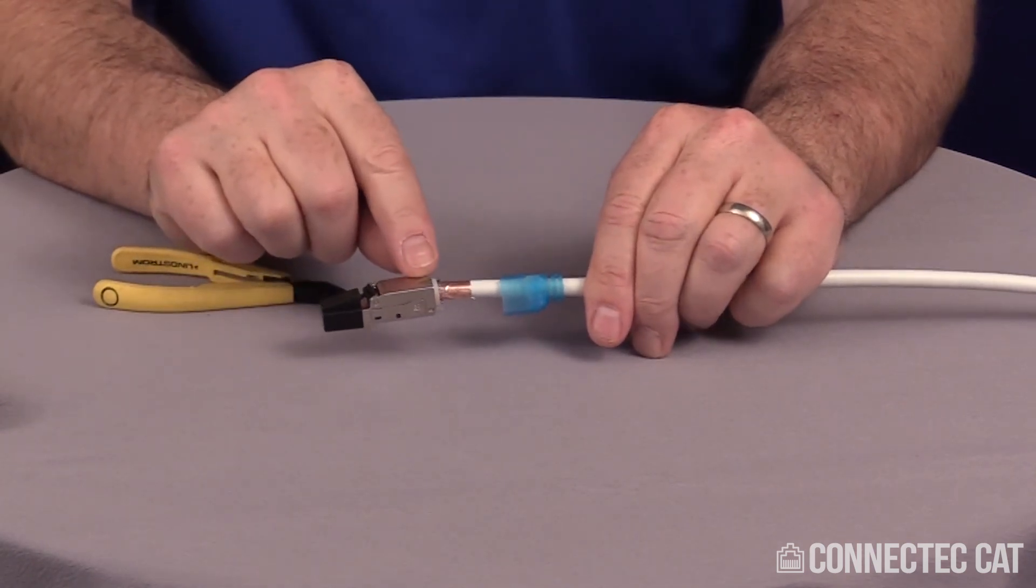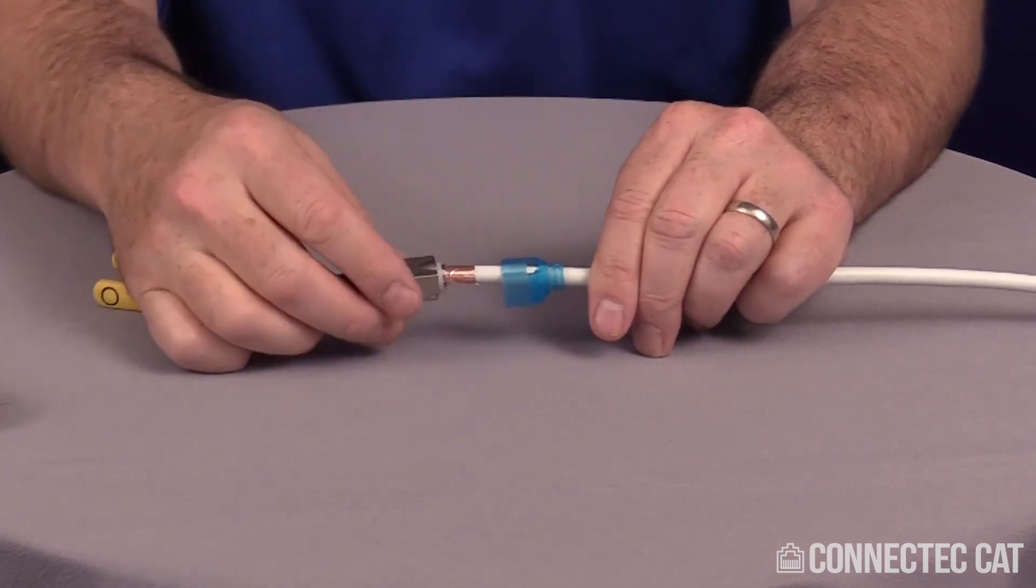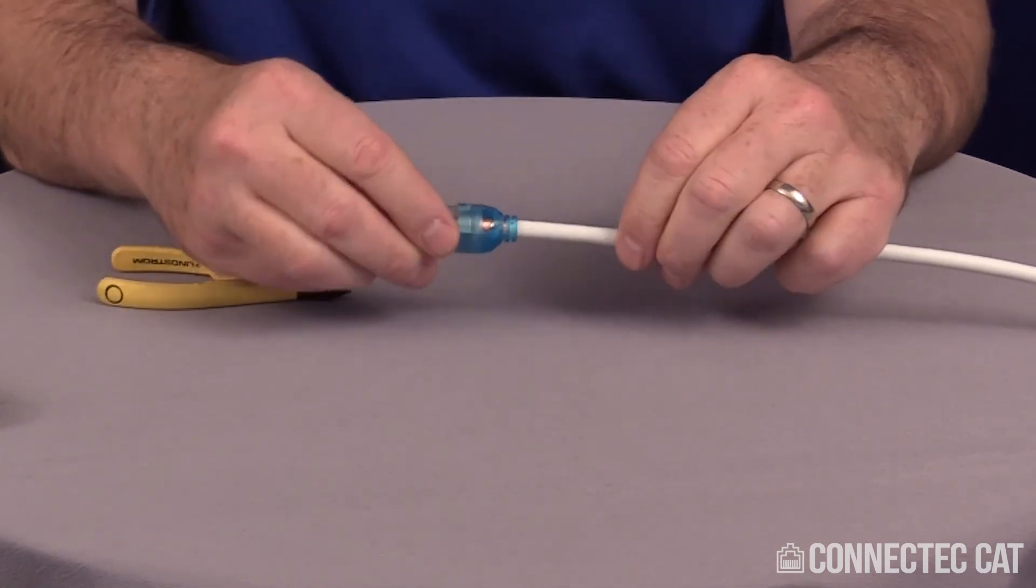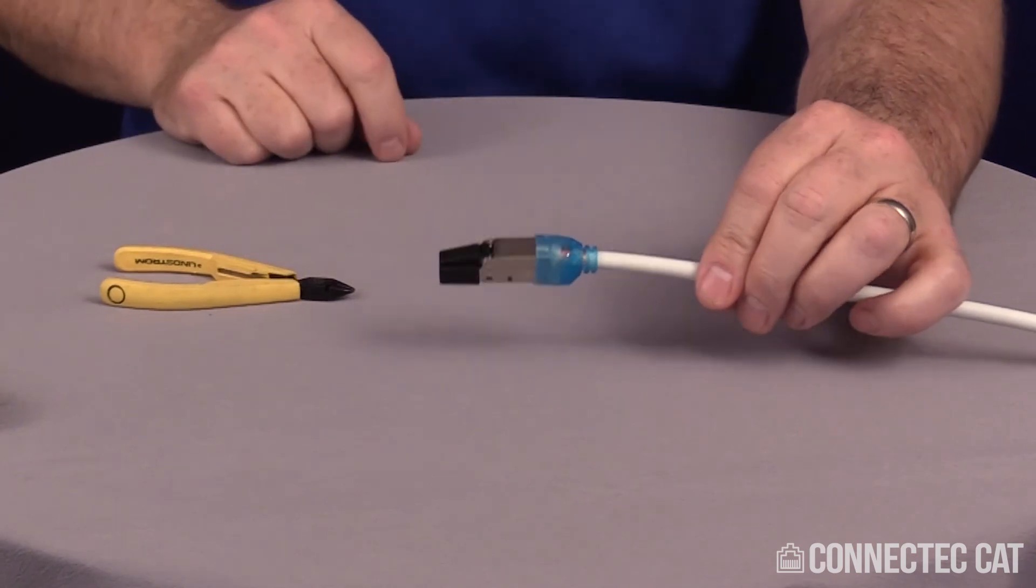You see the connector has a hump on the top here and you see the boot has a rounded portion. Those two line up with each other. You just line them up, push it together and termination is done.